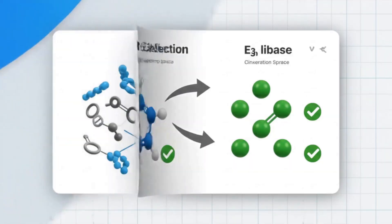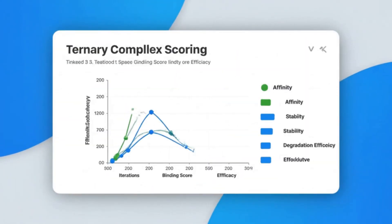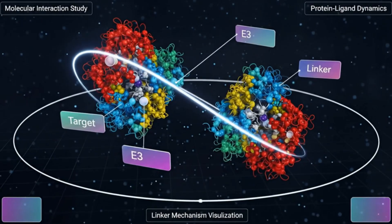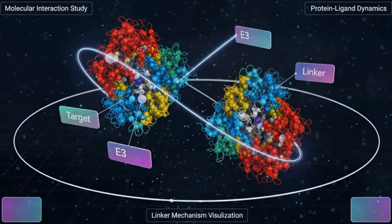This is how we revolutionize drug design. A closed-loop engine that proposes Protacs, simulates ubiquitination likelihood, and ranks candidates for rapid make and test.